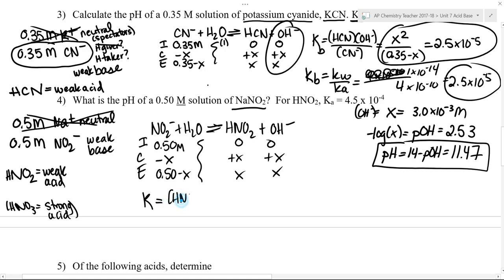I've got two products over one reactant. So my K value is HNO2 times OH divided by NO2. And this we will call a Kb because this NO2 is behaving like a base. I just need a value for K here. I am not given the value for Kb. What I am given is the value for Ka for the conjugate acid.